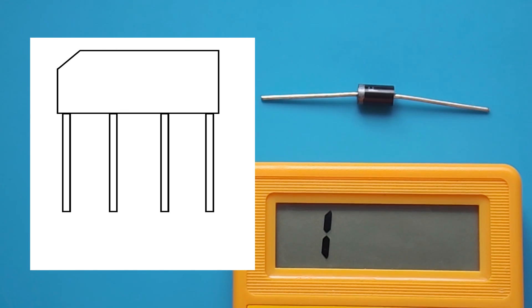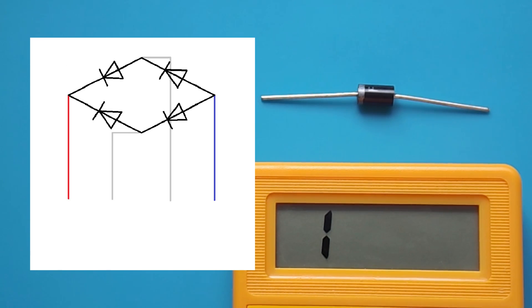To check the diode bridge, you need to clearly understand how it works. It contains four diodes, and each of them can be checked. First, I'll show you how to do it on a separate diode.